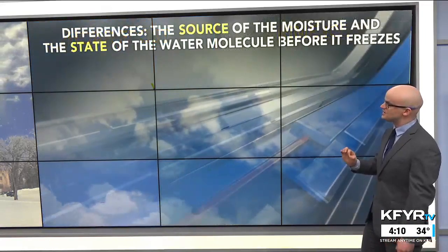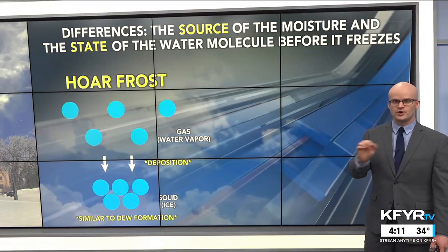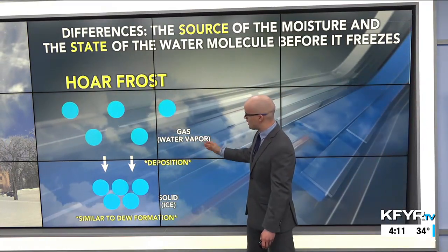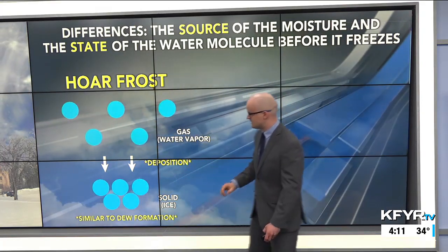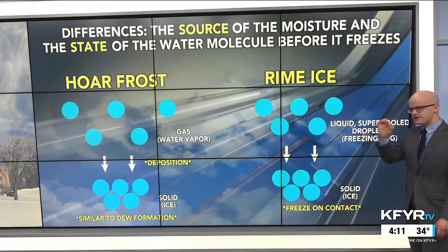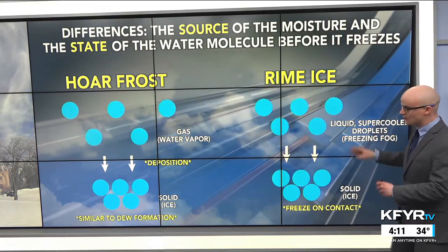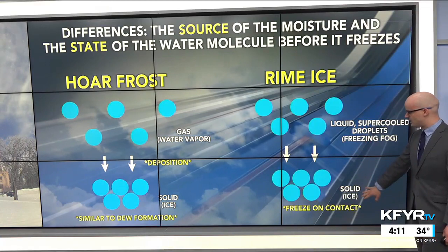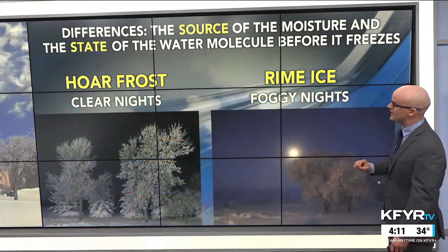So some key differences there with the source of the moisture and the state of the water molecule before it freezes into the ice crystals. With hoarfrost, we go from the gas — the water vapor — through the process of deposition into the solid ice crystals, similar to dew formation. Whereas with rime ice, we have those liquid, very tiny supercooled water droplets in fog that we can see. Water vapor, the gas, is invisible.